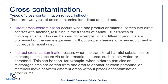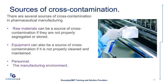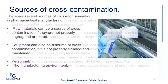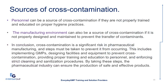Sources of cross-contamination. There are several sources of cross-contamination in pharmaceutical manufacturing. Raw materials can be a source of cross-contamination if they are not properly segregated or stored. Equipment can also be a source of cross-contamination if it is not properly cleaned and maintained. Personnel can be a source of cross-contamination if they are not properly trained and educated on proper hygiene practices. The manufacturing environment can also be a source of cross-contamination if it is not properly designed and maintained to prevent the transfer of contaminants.